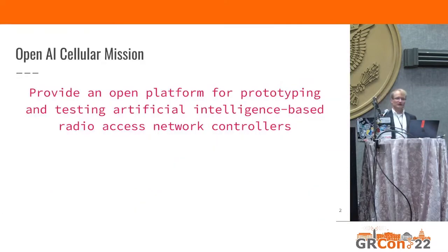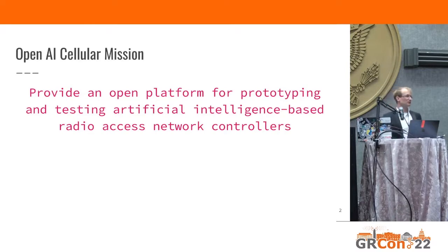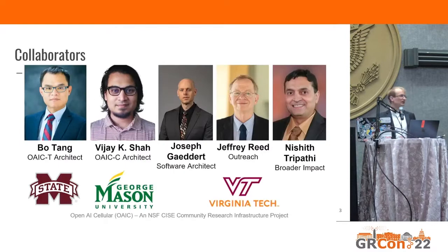Our mission is to provide an open platform for prototyping and testing artificial intelligence based radio access network controllers — it's about cellular networks. In the context of cellular networks, we want to develop AI based controllers for next generation networks. These are my collaborators: professors at Mississippi State University, George Mason and Virginia Tech.